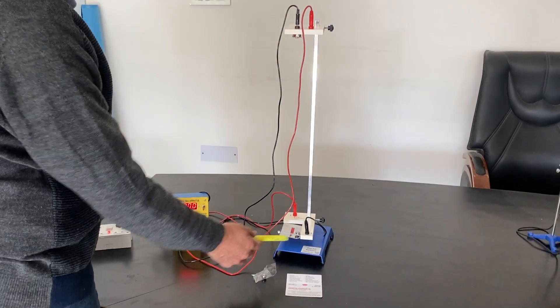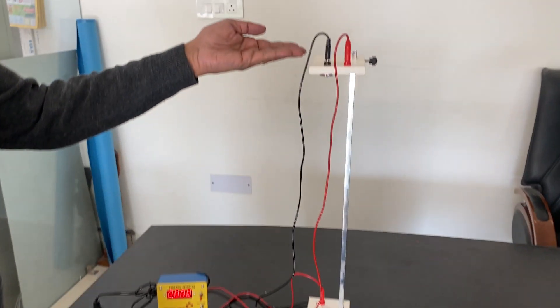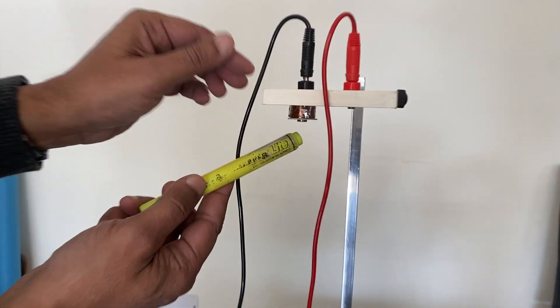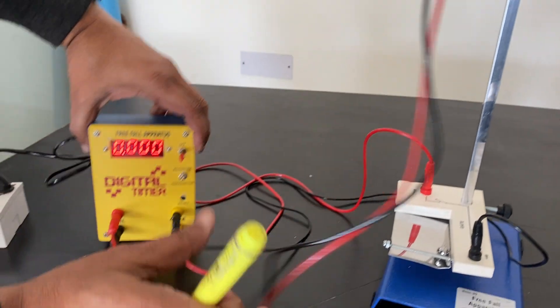This is Abron's free fall operator with the gate. It has a magnetic coil below which is connected with two wires to the digital timer.